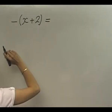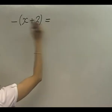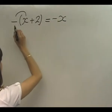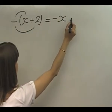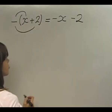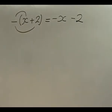Really, what we do is negative times x is negative x, and negative multiplied by 2 is negative 2. So it's quite straightforward, as long as you don't get muddled up by the fact that there's no number outside the bracket.